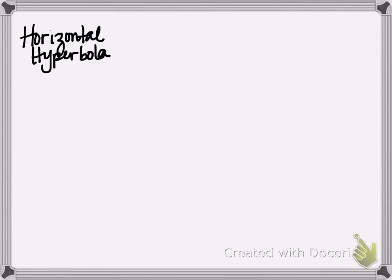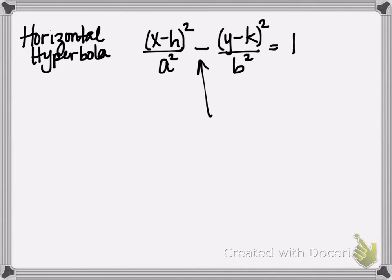So for a horizontal hyperbola, we'll have the quantity X minus H, the quantity squared, divided by A squared. But now this is going to be minus, so we have some subtraction here, Y minus K, the quantity squared, divided by B squared, is equal to 1. So you'll know immediately that this is a hyperbola because you'll see that we have a subtraction.